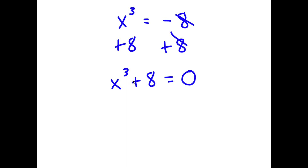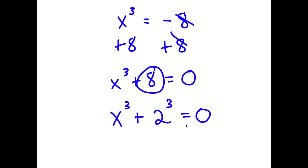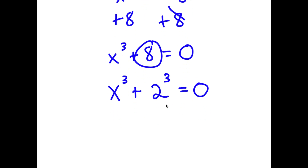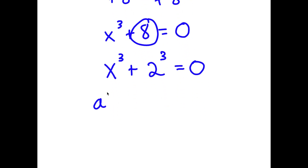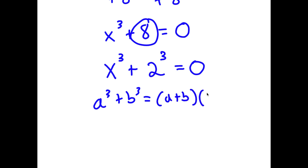Now I'm going to rewrite 8 as 2 to the power of 3. So now I have x to the power of 3 plus 2 to the power of 3 is equal to 0. If I have something in the form a to the power of 3 plus b to the power of 3, this is equal to a plus b times a squared minus ab plus b squared.